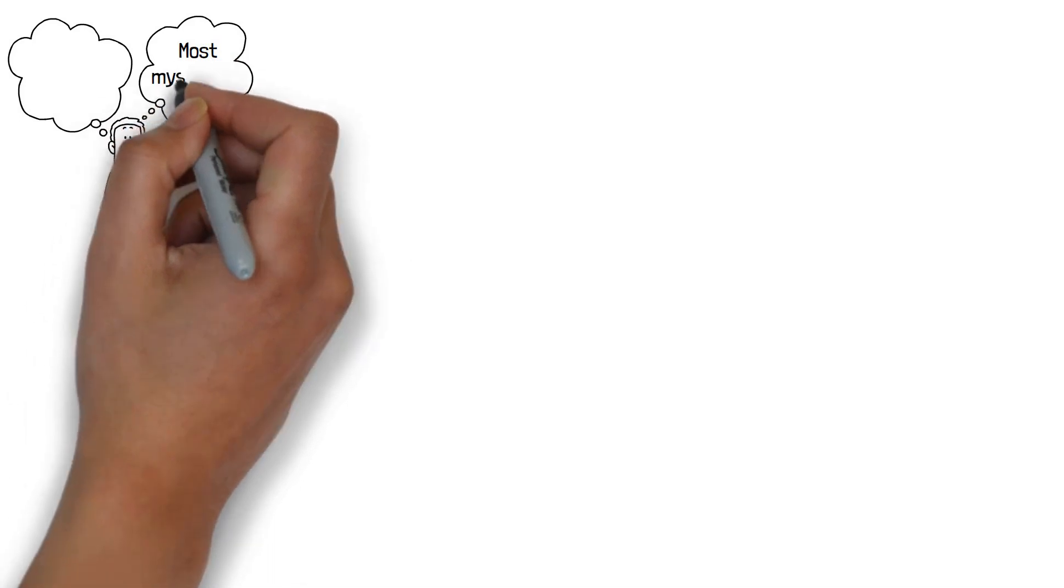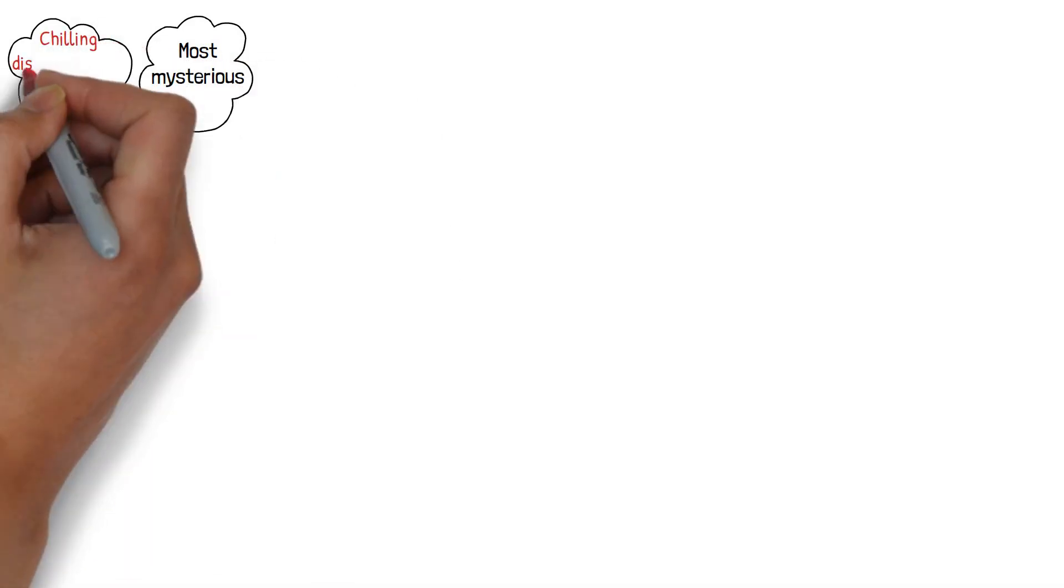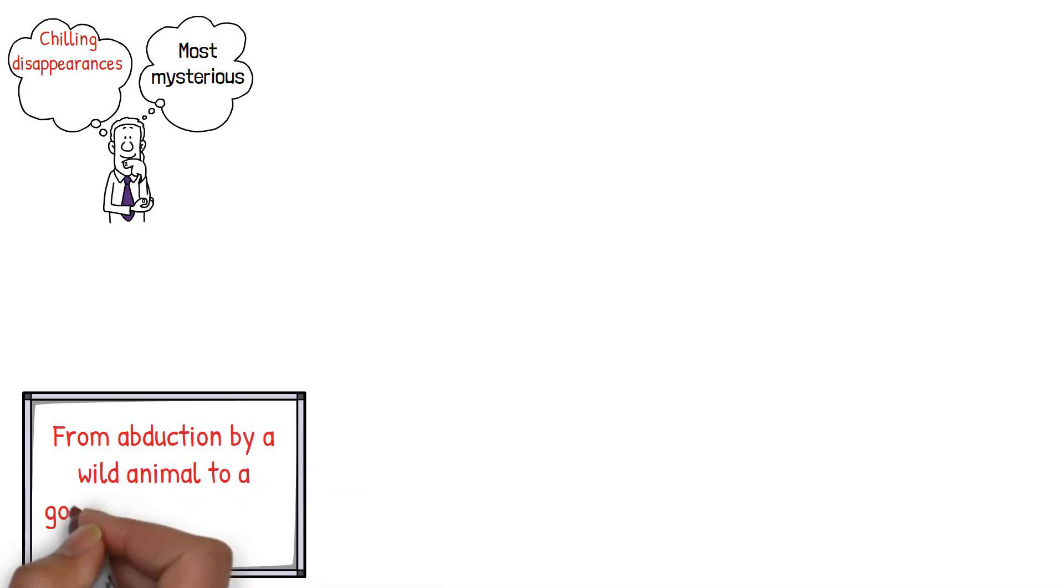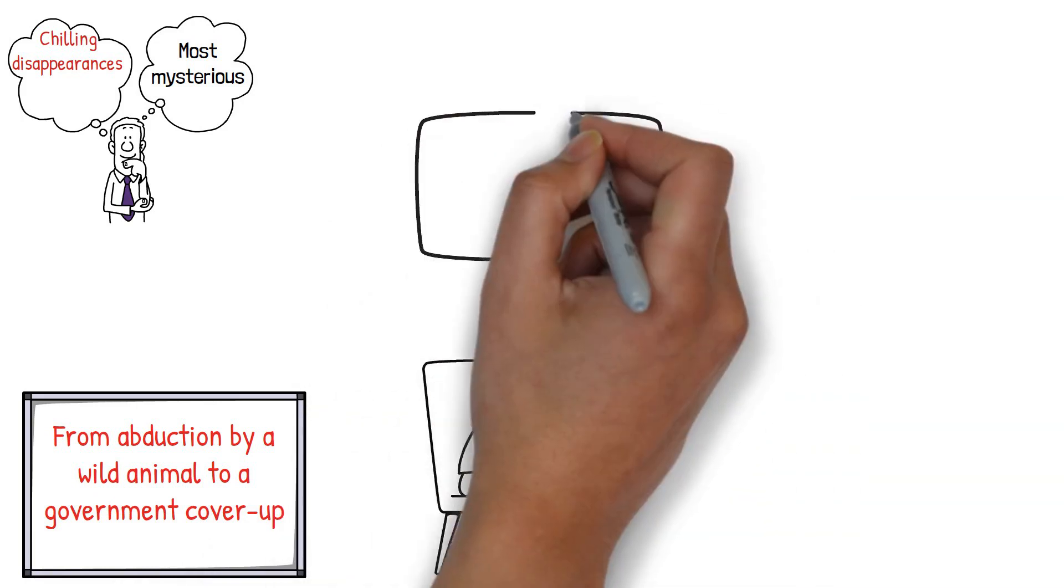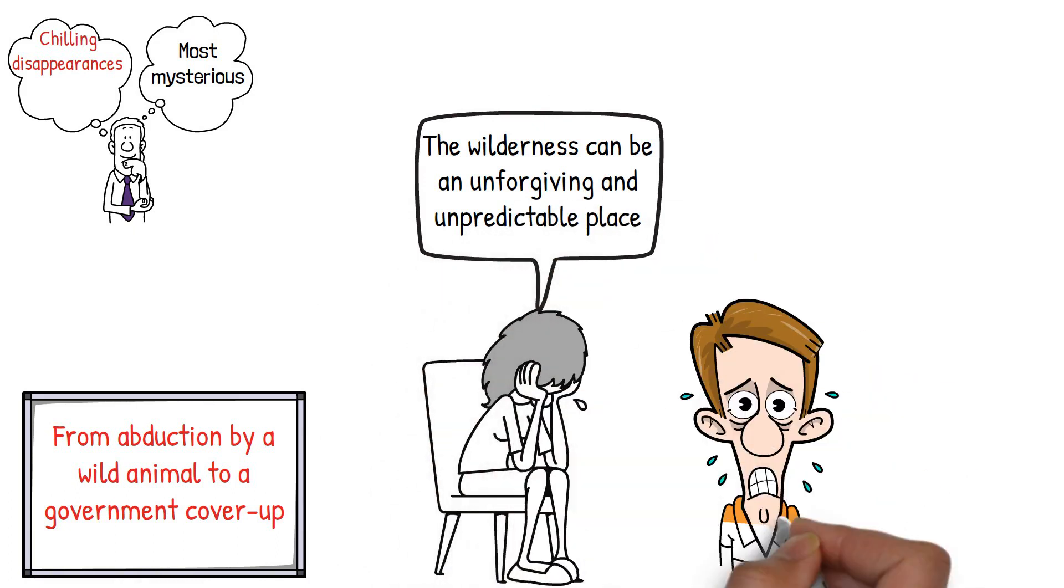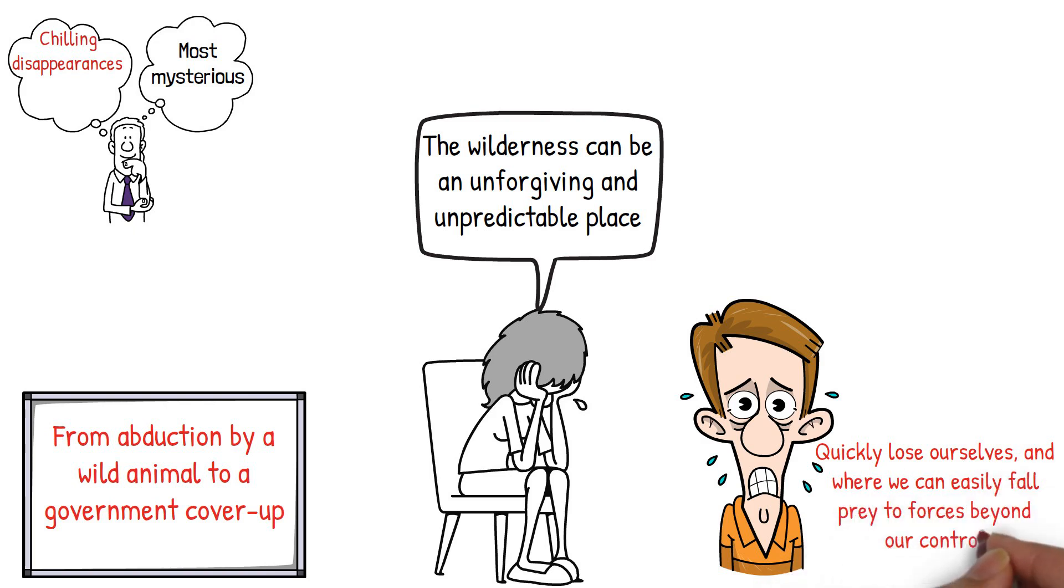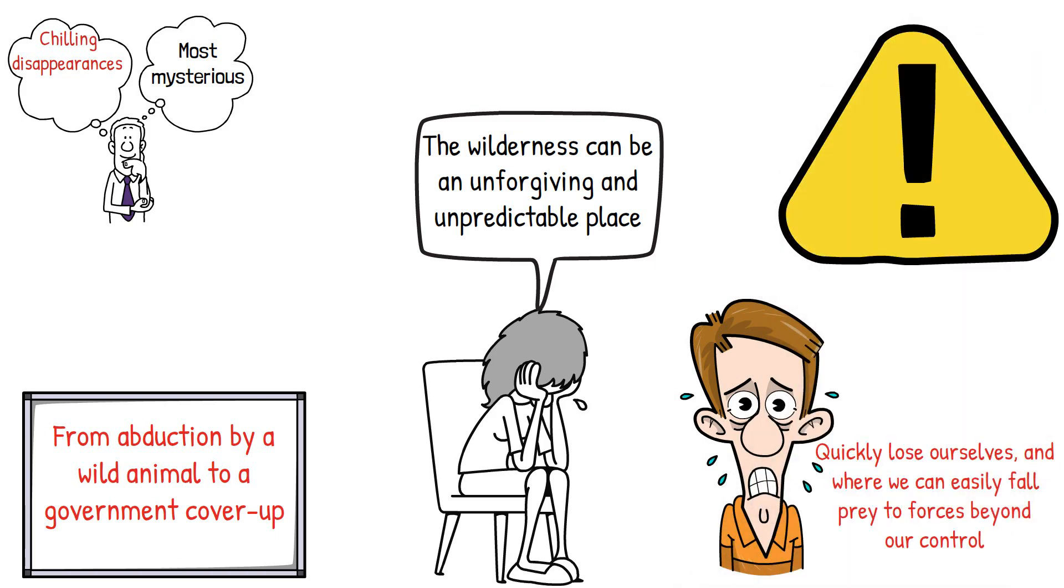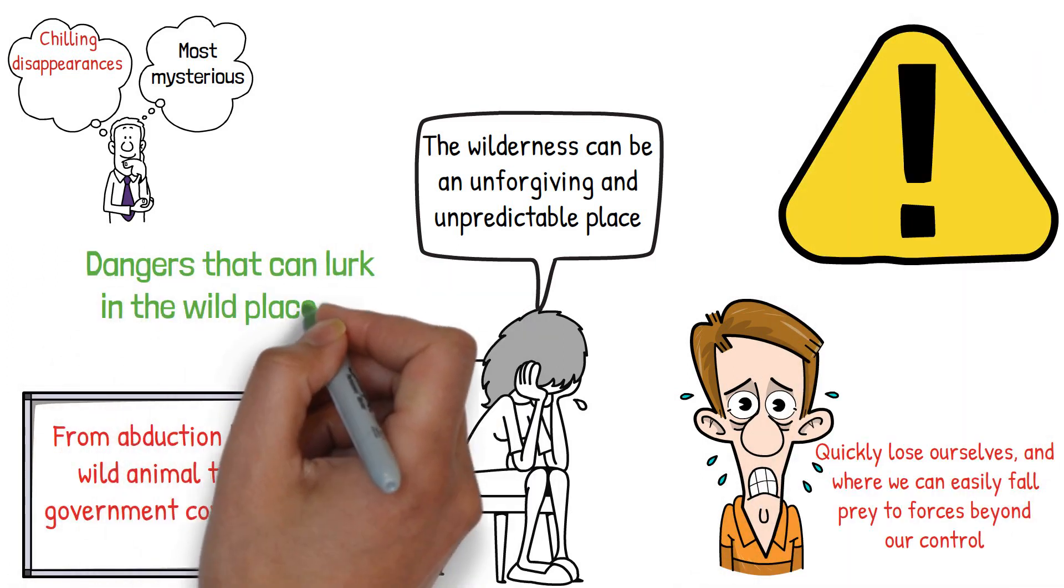The incident has become one of the most mysterious and chilling disappearances in recent history. Many theories have been put forward, from an abduction by a wild animal to a government cover-up. The truth may never be known, but what is clear is that the wilderness can be an unforgiving and unpredictable place. It is a place where we can quickly lose ourselves, and where we can easily fall prey to forces beyond our control. The story of these hikers serves as a cautionary tale, a warning of the dangers that can lurk in the wild places of the world.